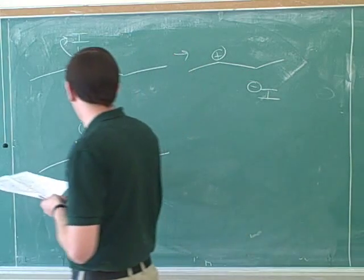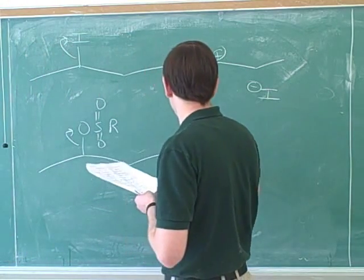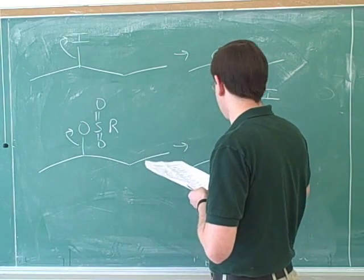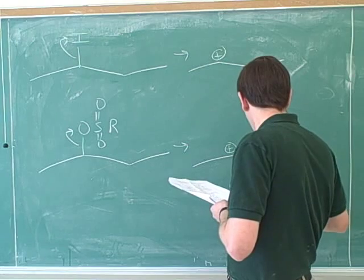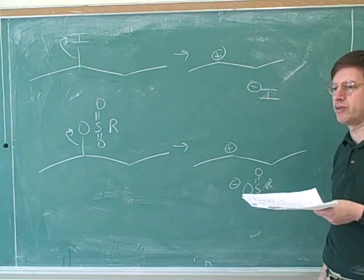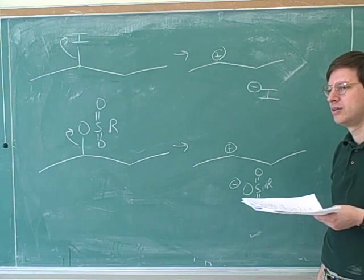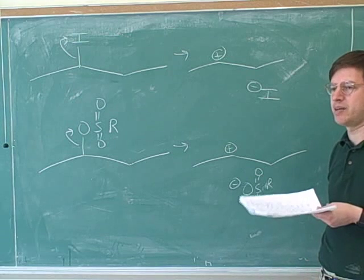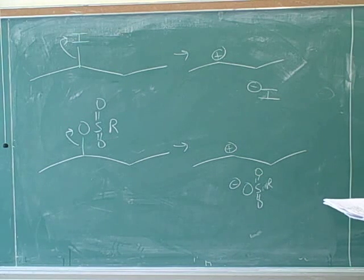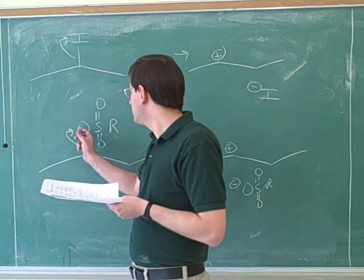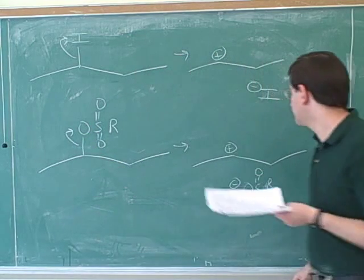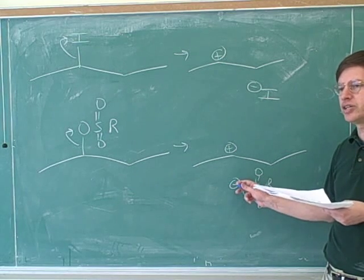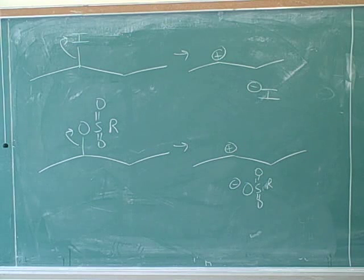Here's another type of thing that's a good leaving group. This is called a sulfonate. Here's what the sulfonate would look like after it leaves. This is also a good leaving group — it can also stabilize the negatives. The leaving group that we have here is a neutral oxygen before it leaves. Now, neutral oxygens are usually bad leaving groups. So there must be something unusual about this sulfonate that lets it stabilize this negative charge.